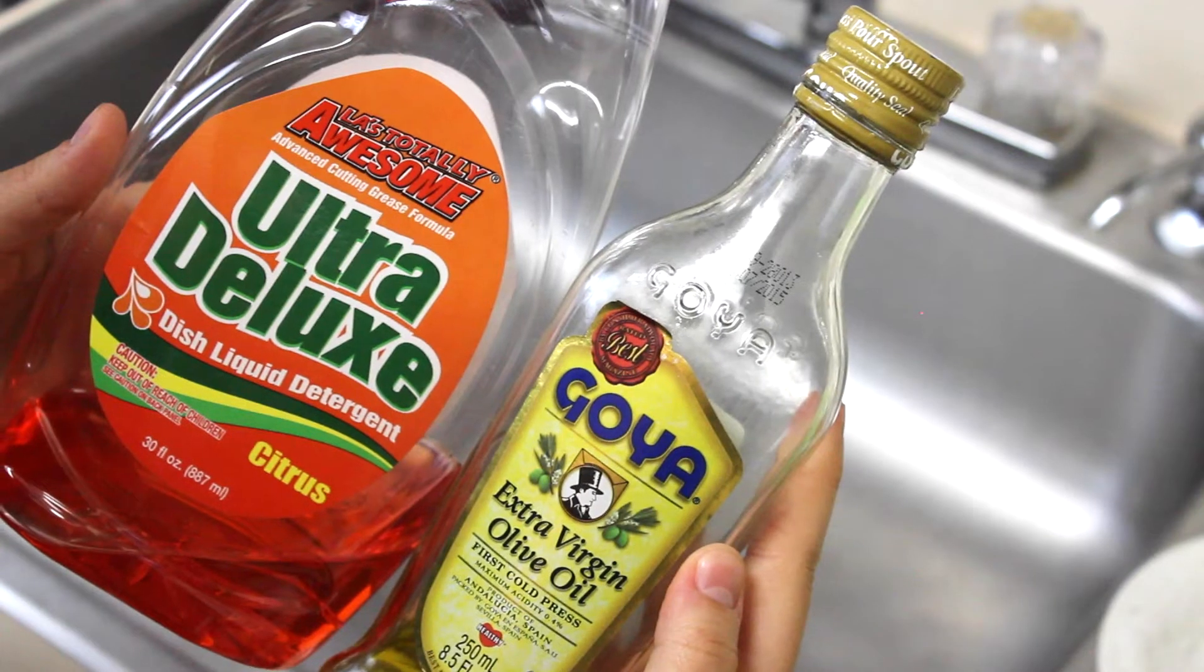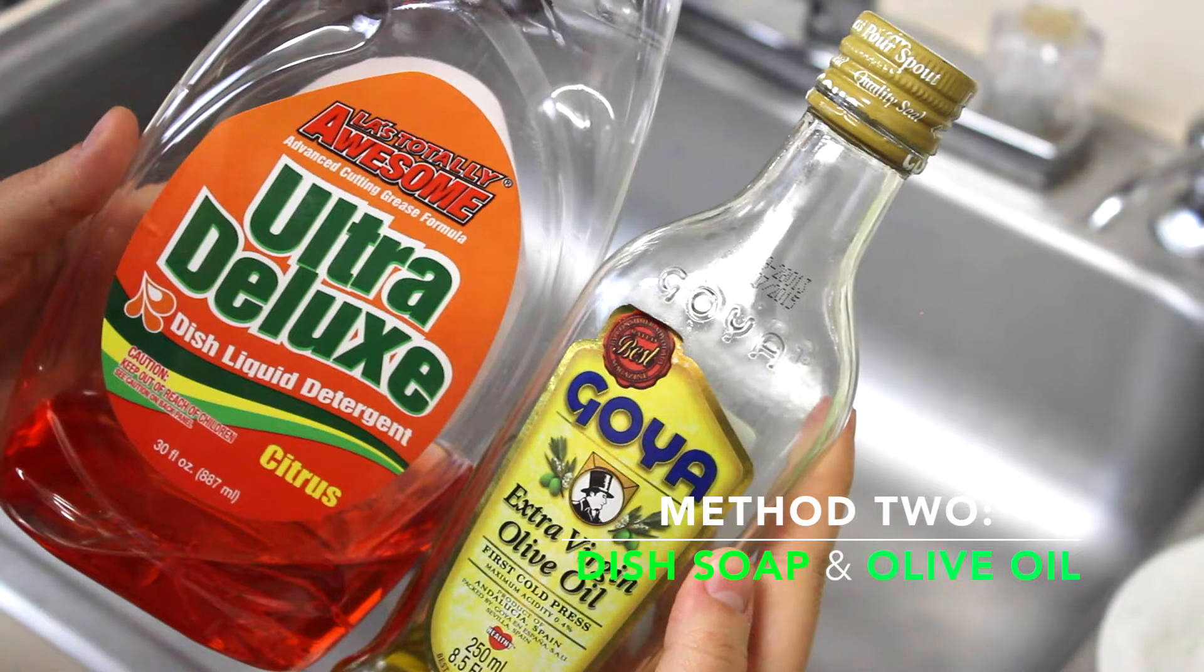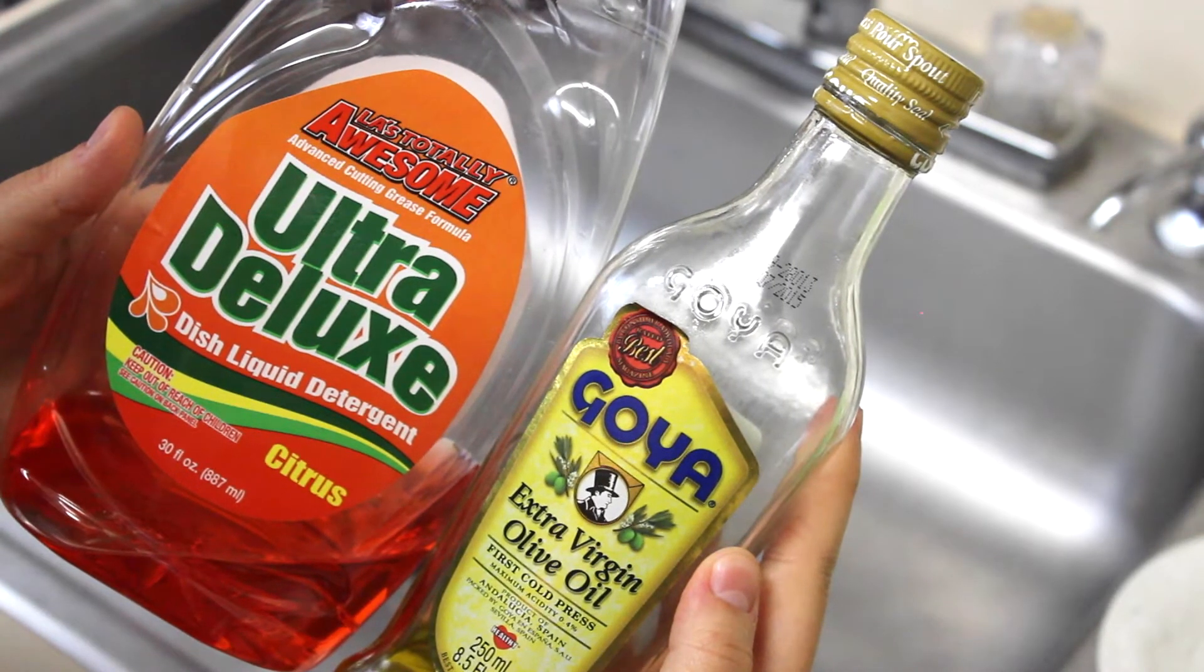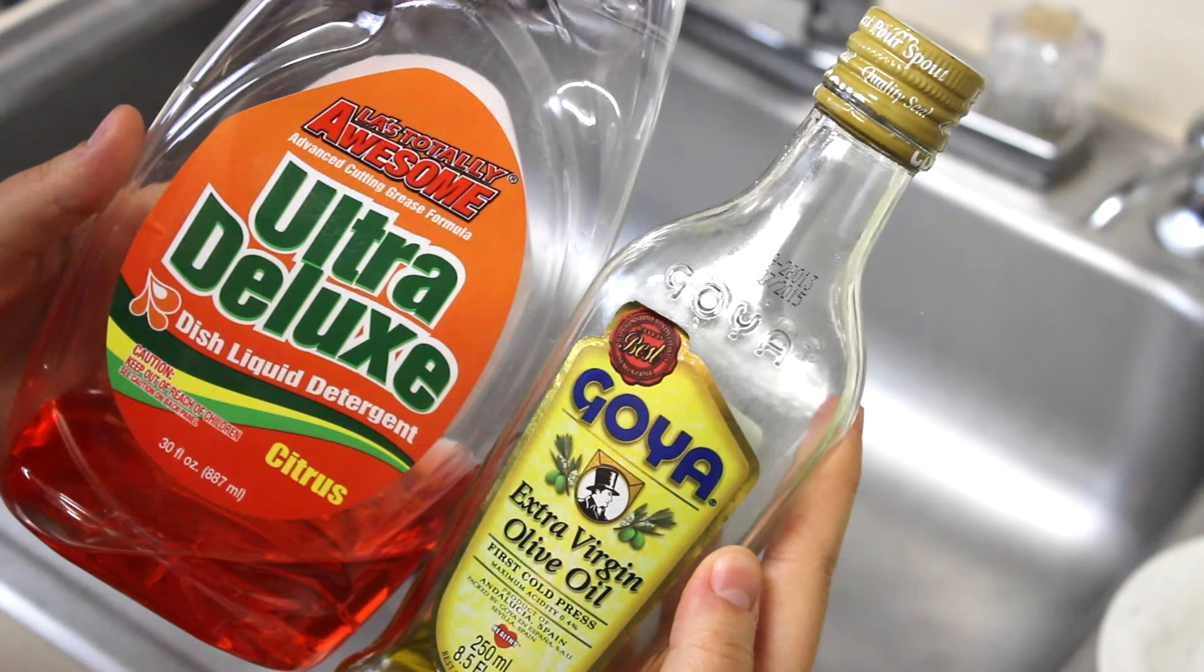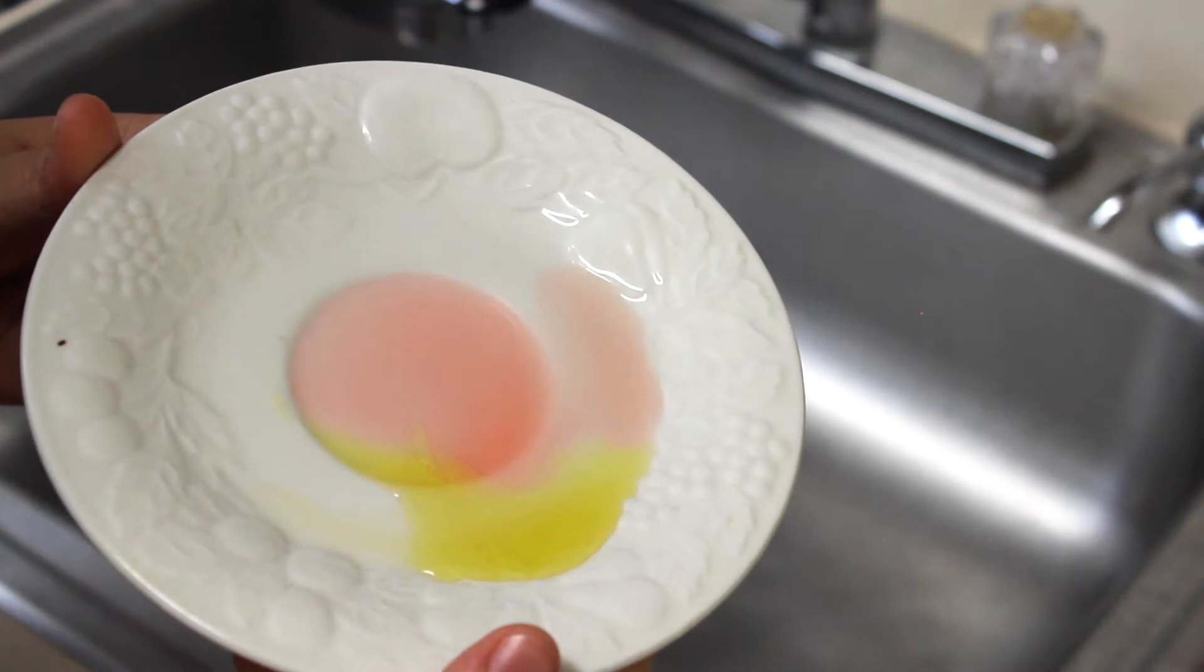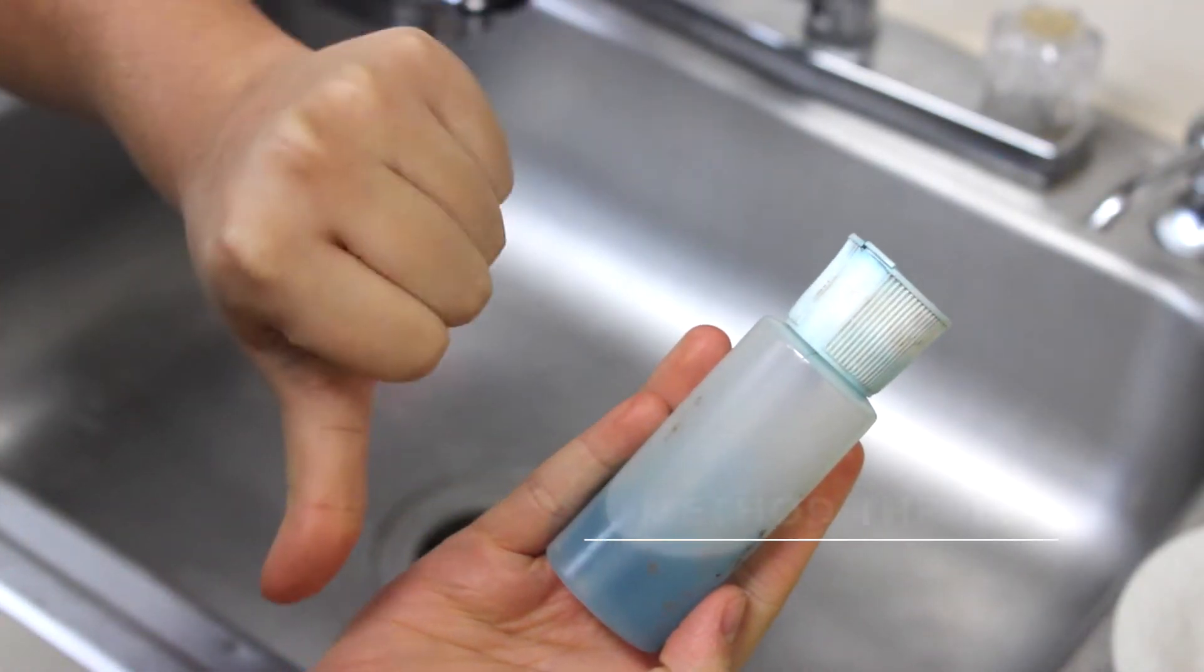Method number two is dish soap and olive oil. The dish soap will remove all the oil and bacteria and the olive oil will restore the moisture that it needs. See a little pattern here? When you mix these two substances make sure you put a little bit more dish soap than olive oil.